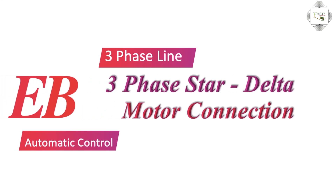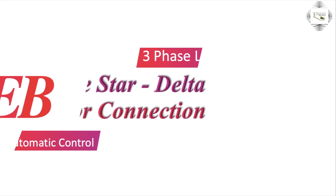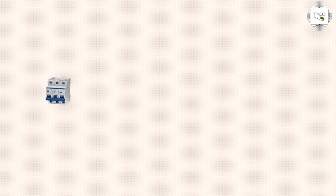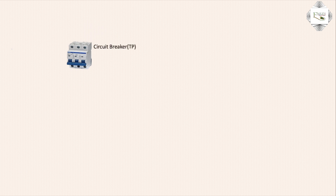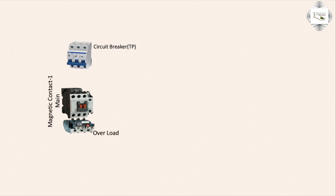Hello viewers, today we discuss the three-phase star-delta motor connection automatic control — how to connect star-delta connection. First, circuit breaker TP means 3-pole circuit breaker: input terminal, output terminal, magnetic contact, overload, magnetic contact.